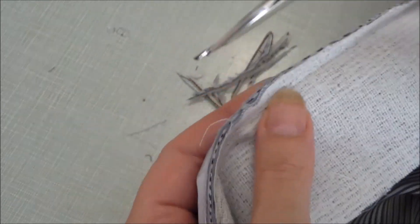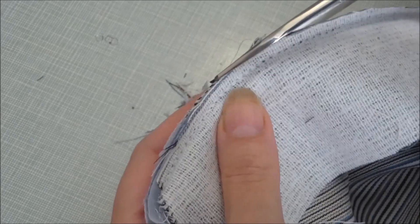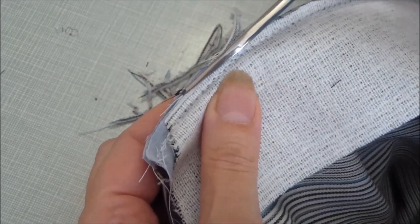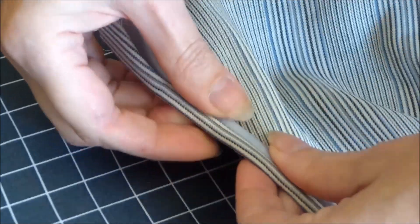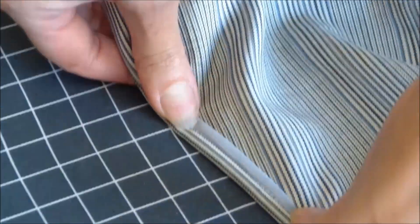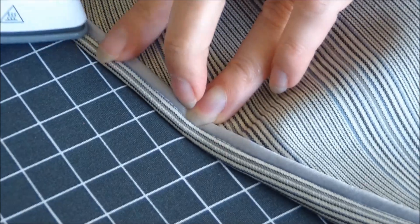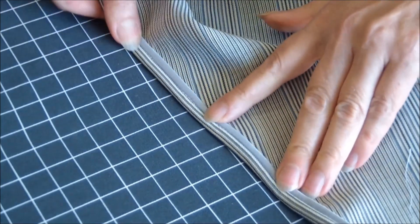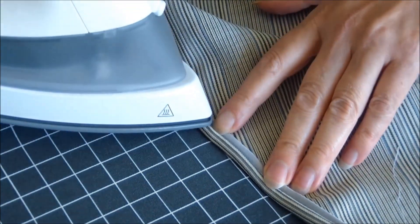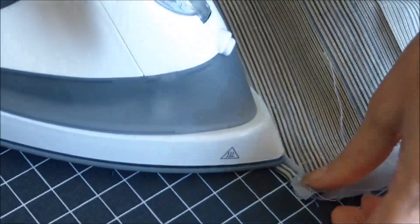To make the entrance to the pocket look more beautiful, the excess fabric of the seams can be cut off with scissors. This fold of the edge must be fixed with a stitching line.